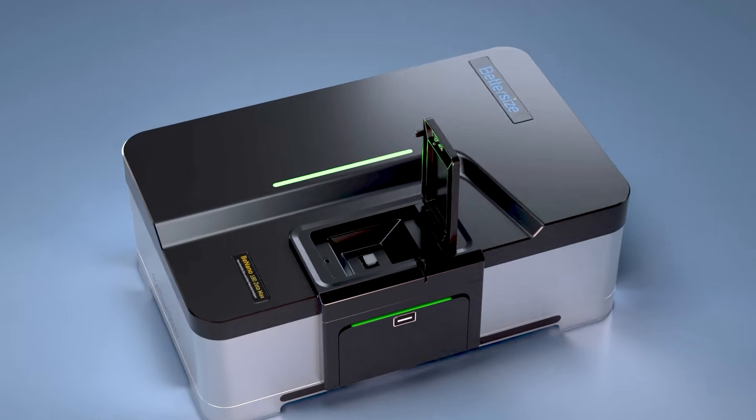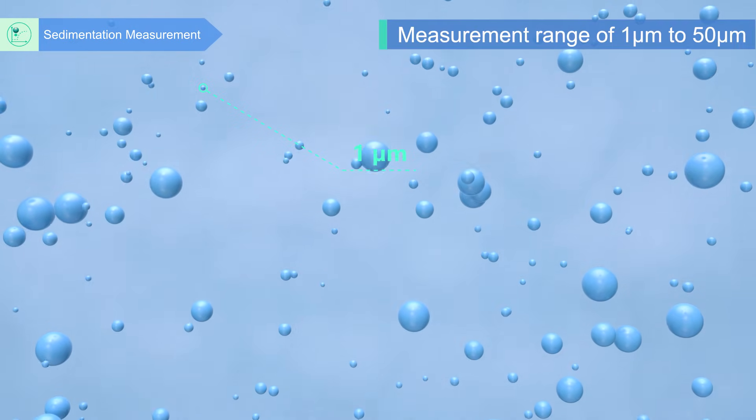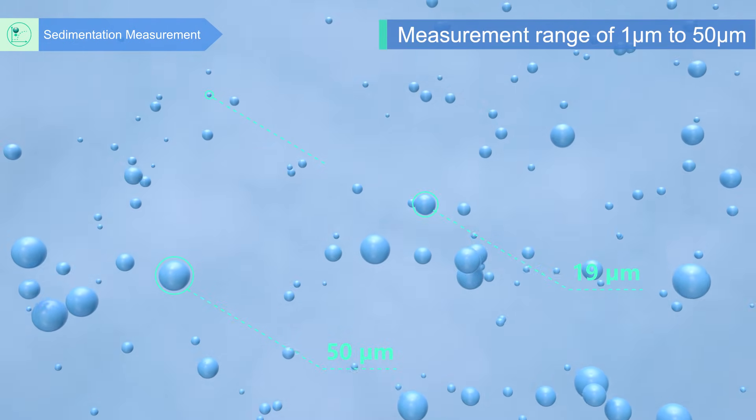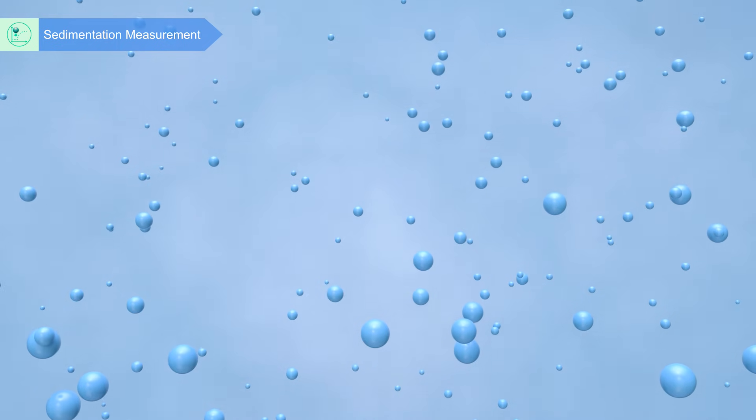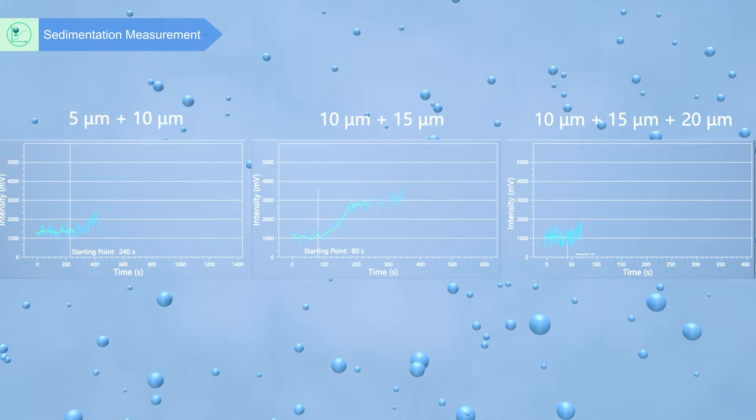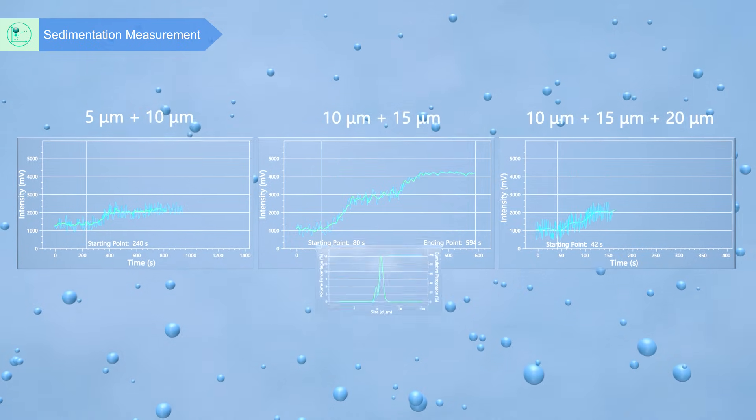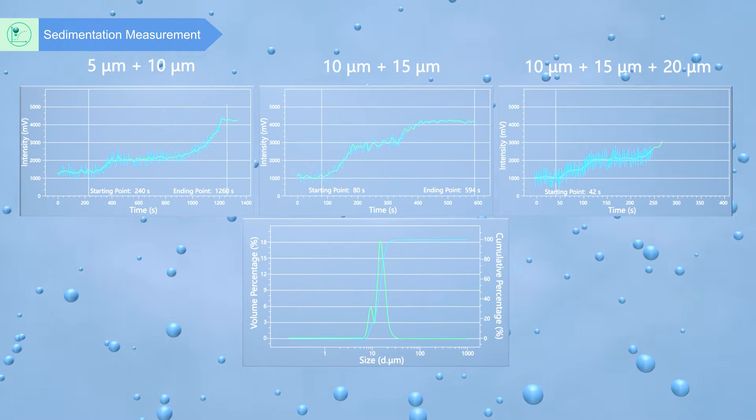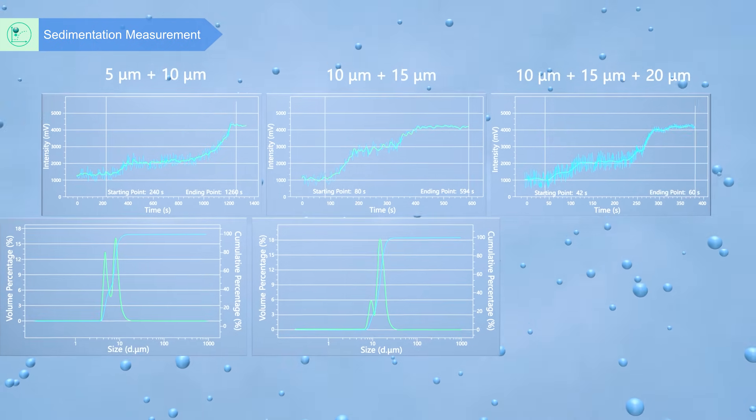Bnano, by adopting the sedimentation technology, can conduct measurement in the range of one micrometer to 50 micrometers, which greatly expands its application scope. At the same time, the sedimentation test also has a high resolution and can distinguish the particle size distribution difference with a ratio of 1 to 1.5.